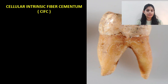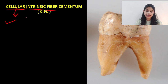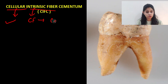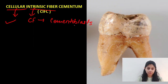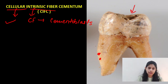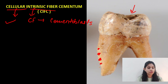The next type is cellular intrinsic fiber cementum. Cellular means there is presence of cementocytes, and intrinsic fibers means the collagen fibers are produced by the cementoblasts native to the cementum tissue. This type of cementum is seen along resorption lacunae — when forces of mastication act on the tooth, certain areas of resorption are produced. Cellular intrinsic fiber cementum helps in the formation of reparative cementum and covers areas of resorption lacunae.